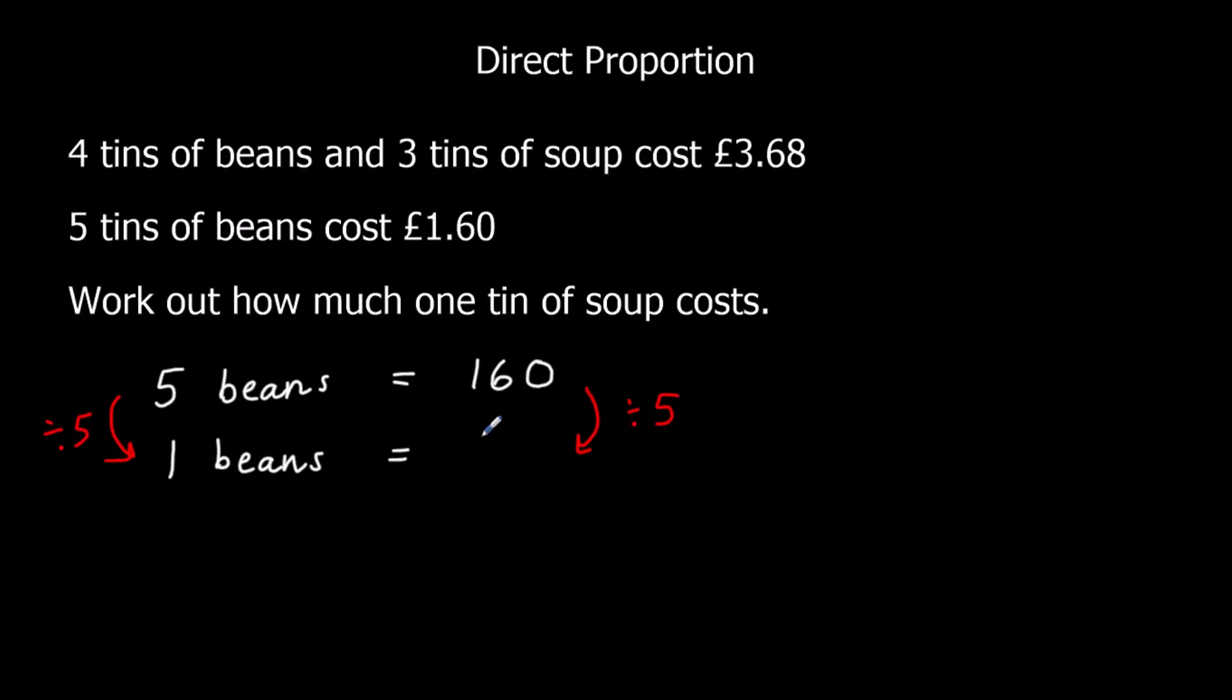So 160 over 5 is 32. 160 over 10 is 16 and double, so 32p for 1 tin of beans.